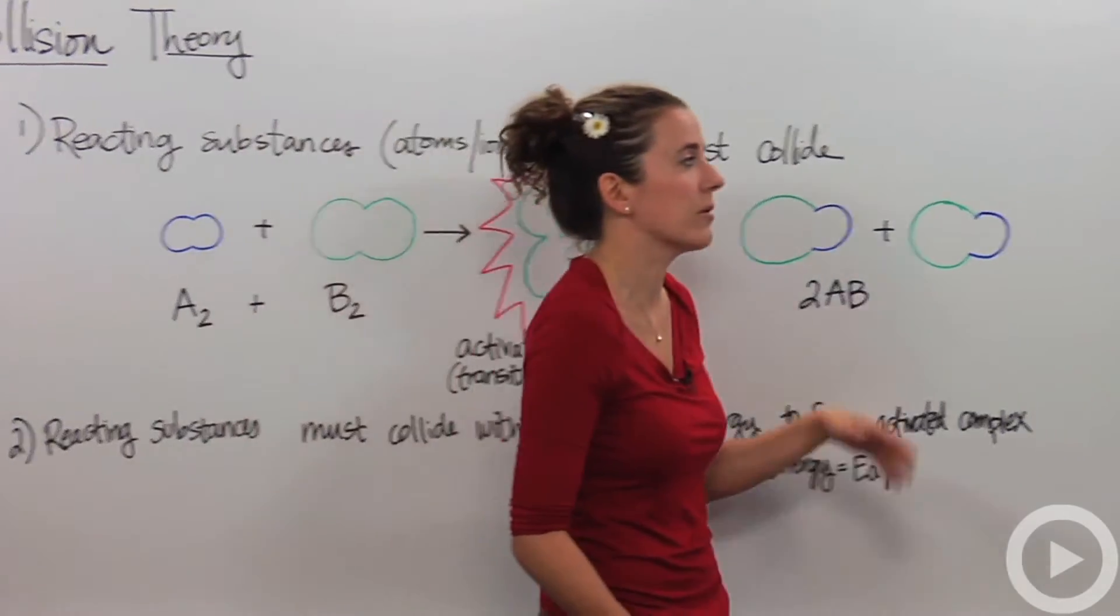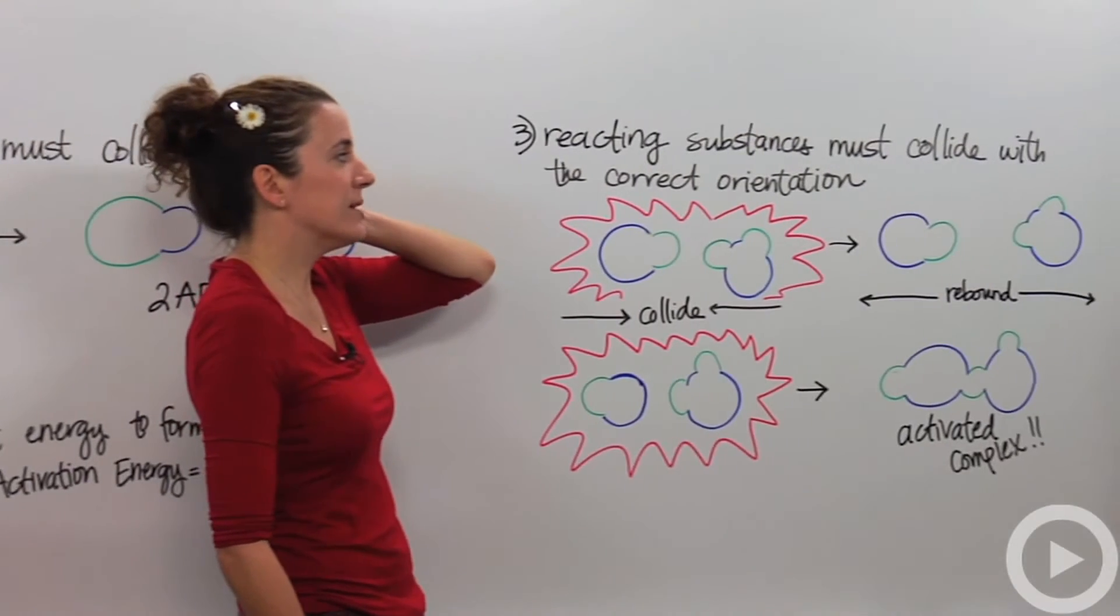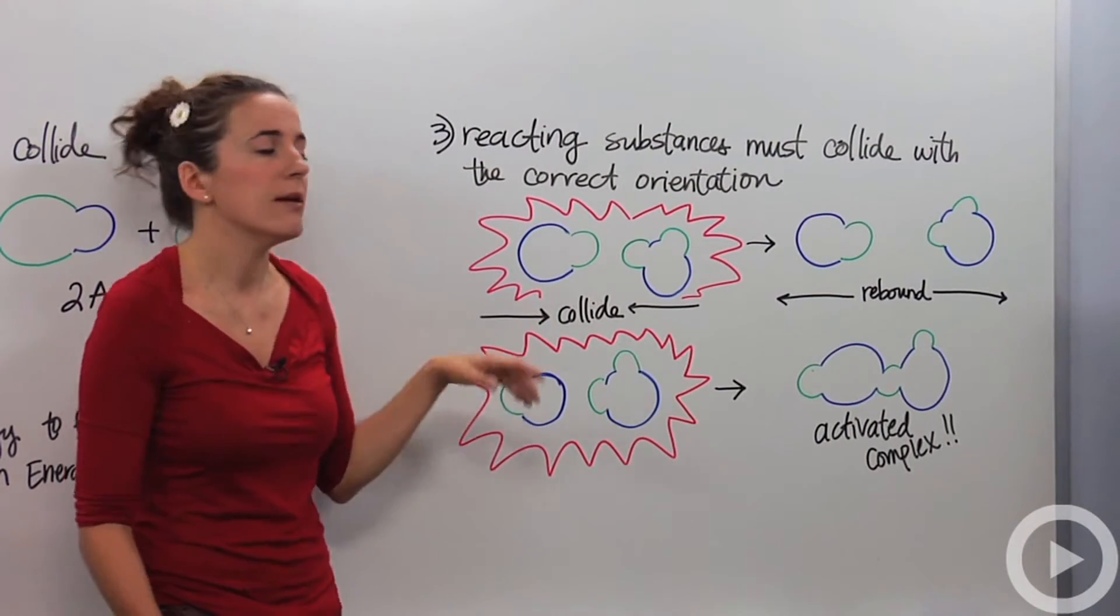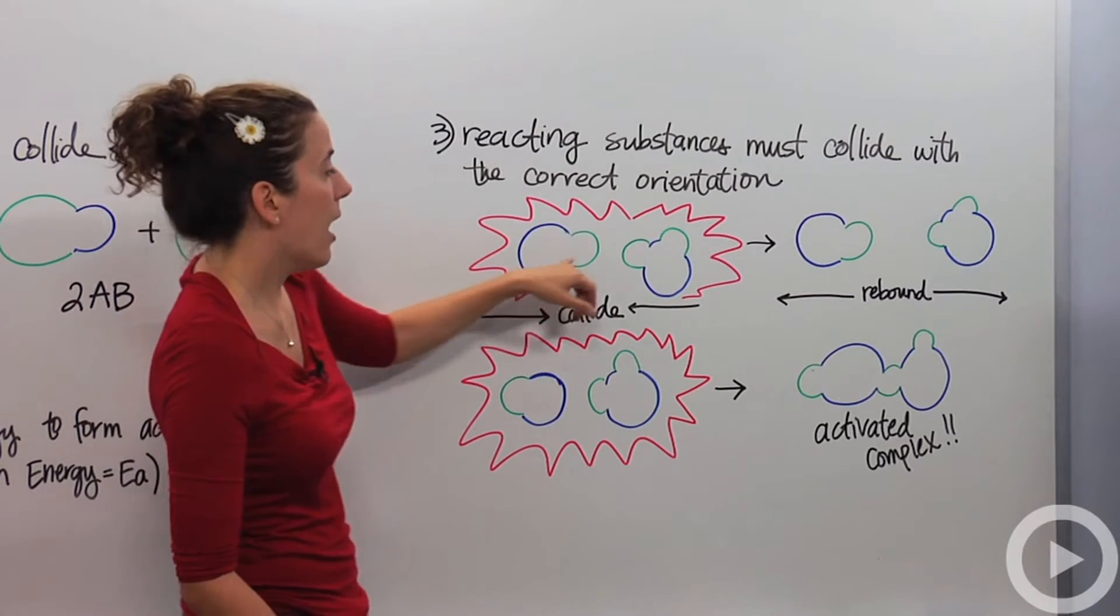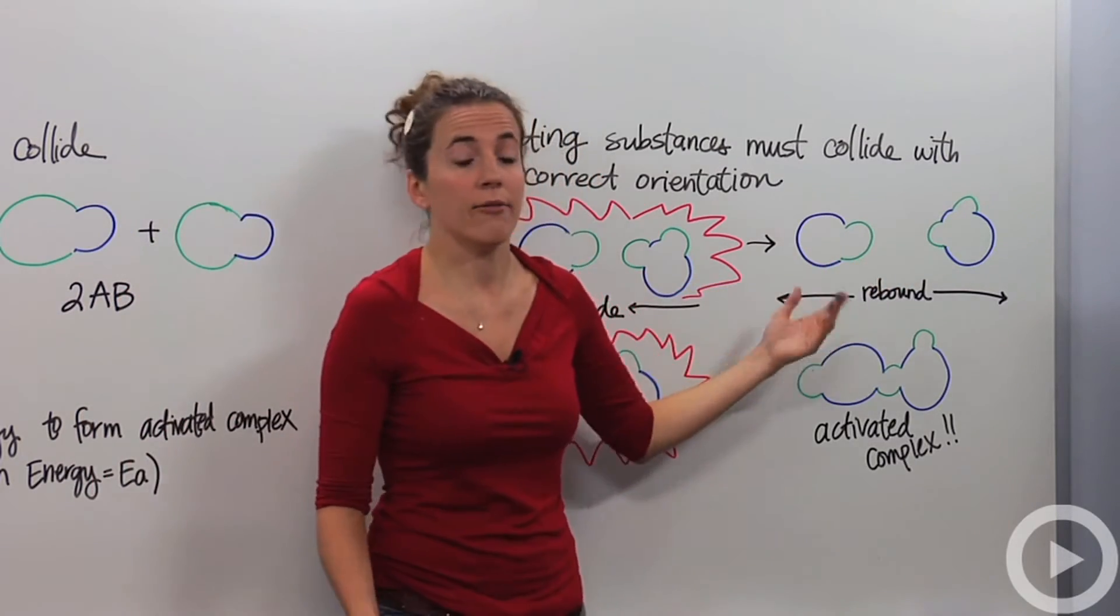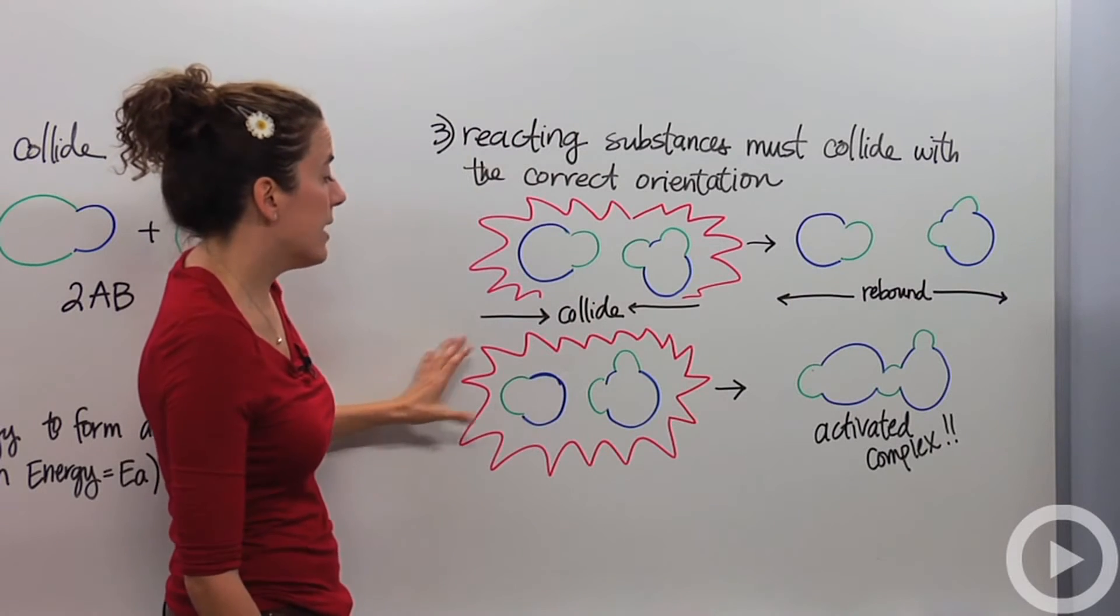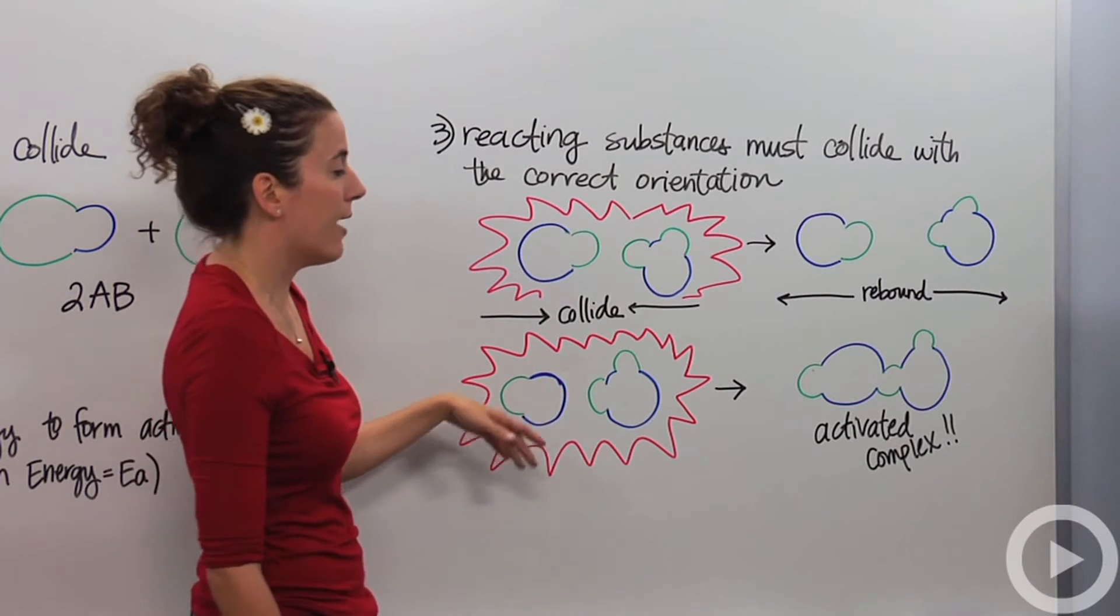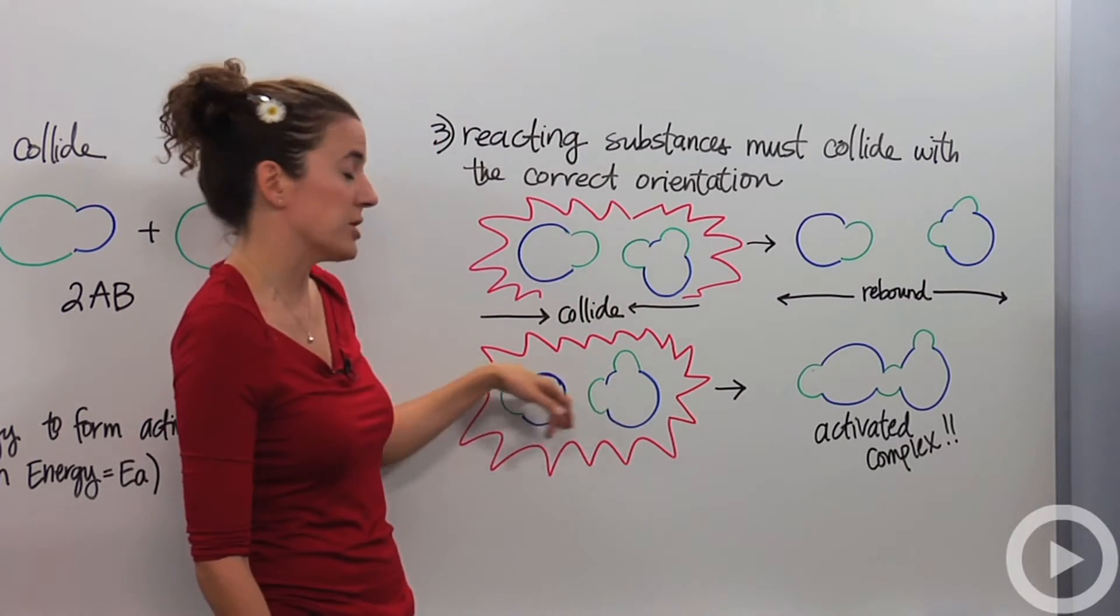And the last thing in the collision theory is that reacting substances must collide with the correct orientation. So if they made a collision in an orientation that wasn't great for them, they would actually rebound off each other and not react at all. But if they did, they have to make sure they line up correctly for the correct reaction site to occur.